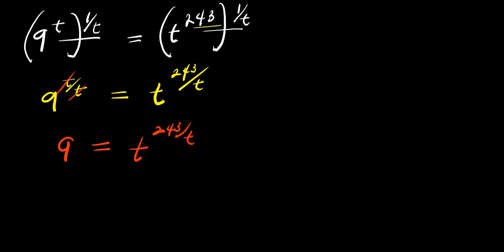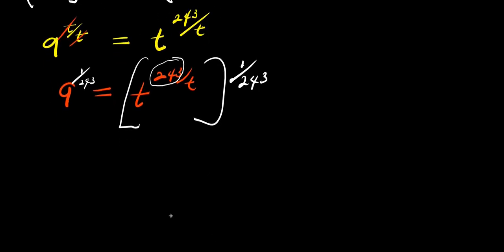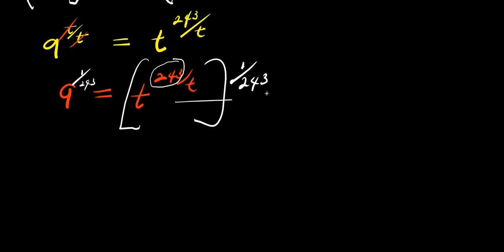So from here, what we are going to do would be to also eliminate this 2/3, and we can achieve that by raising this to the power of 1 over 2/3, and we also raise this to the power of 1 over 2/3. So by doing that, we are going to multiply this out again using the same identity: a power n, raised to power m, equals a power n times m.